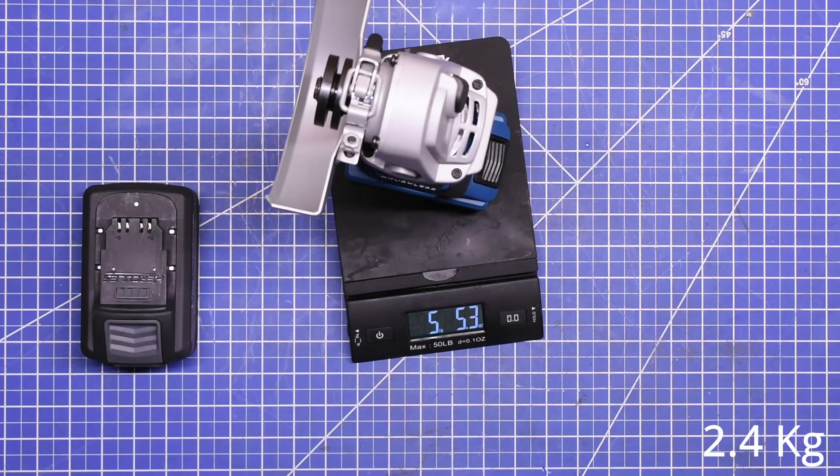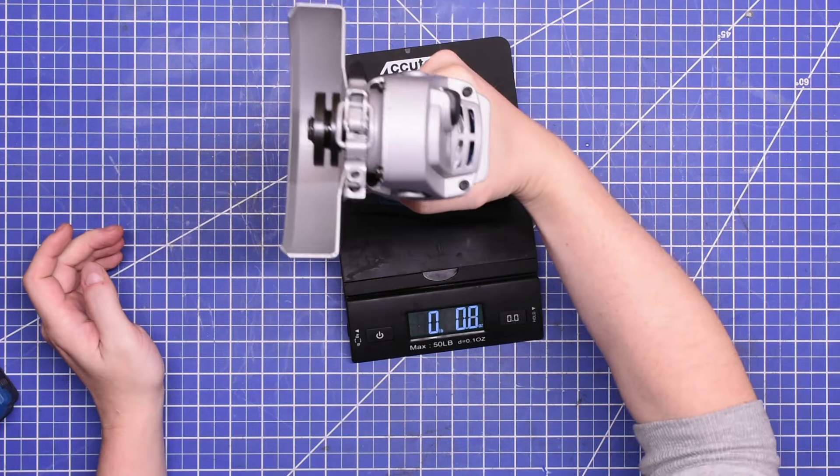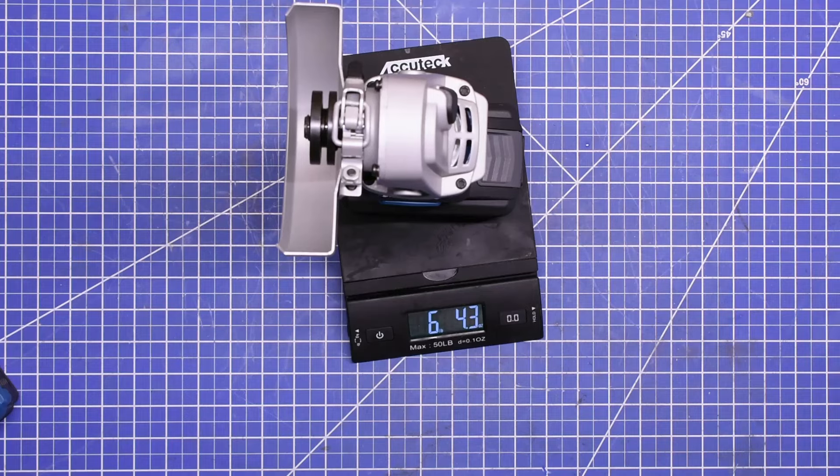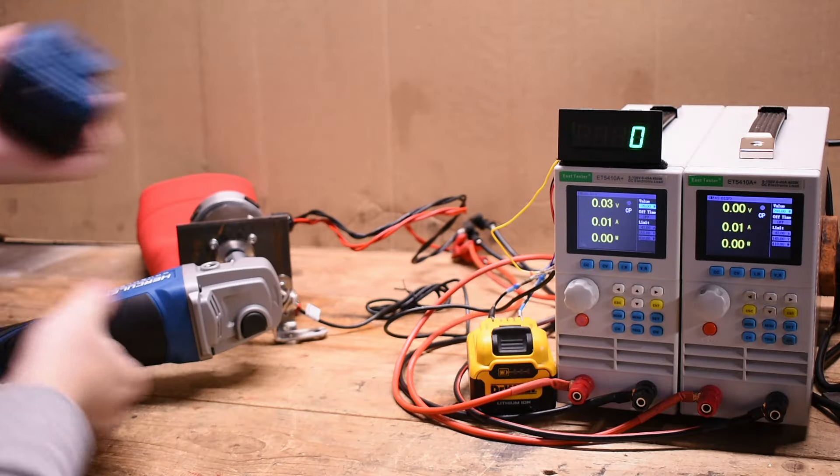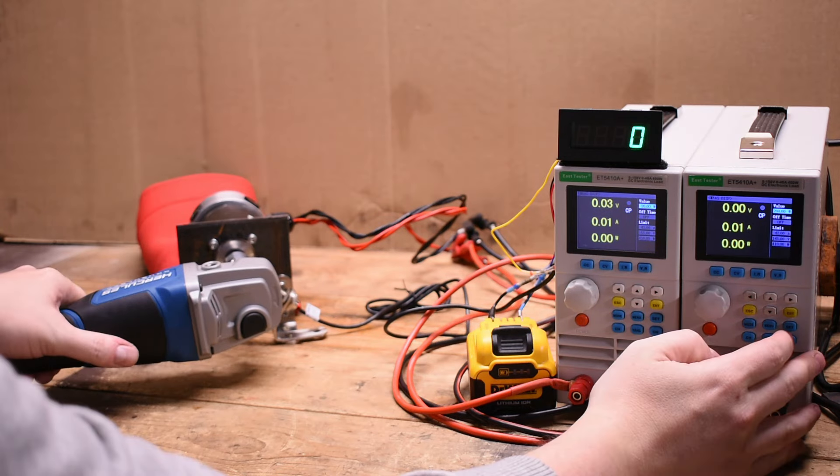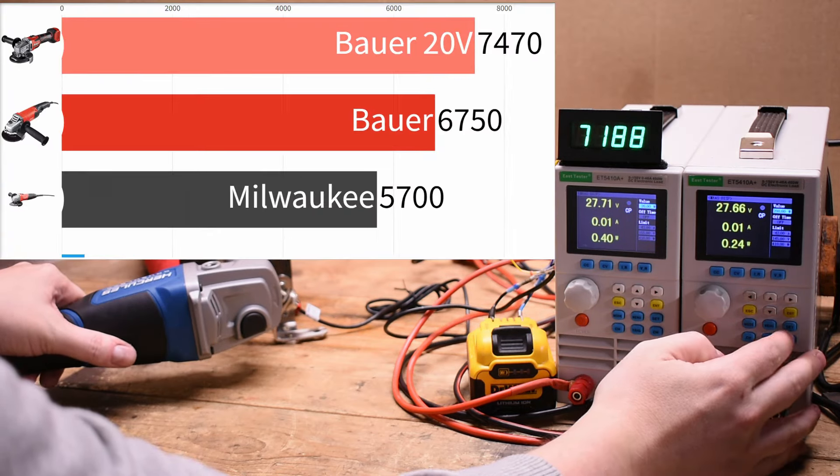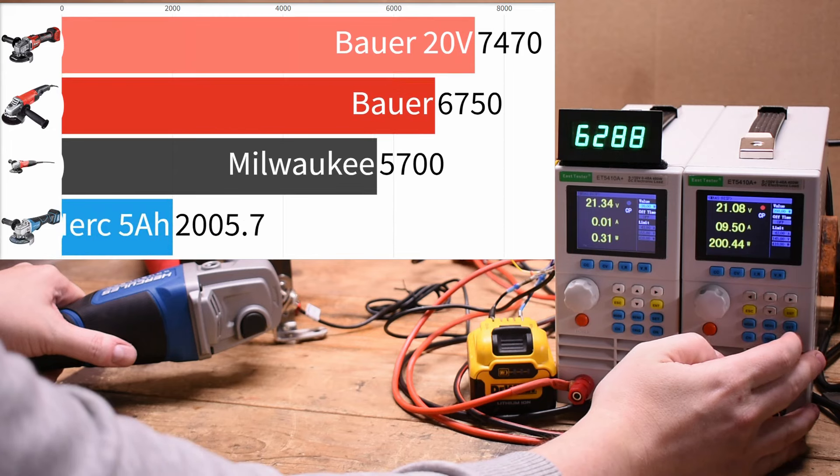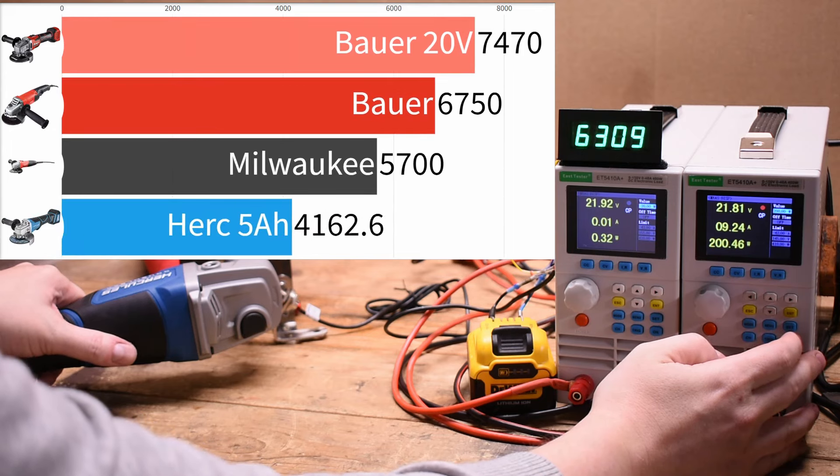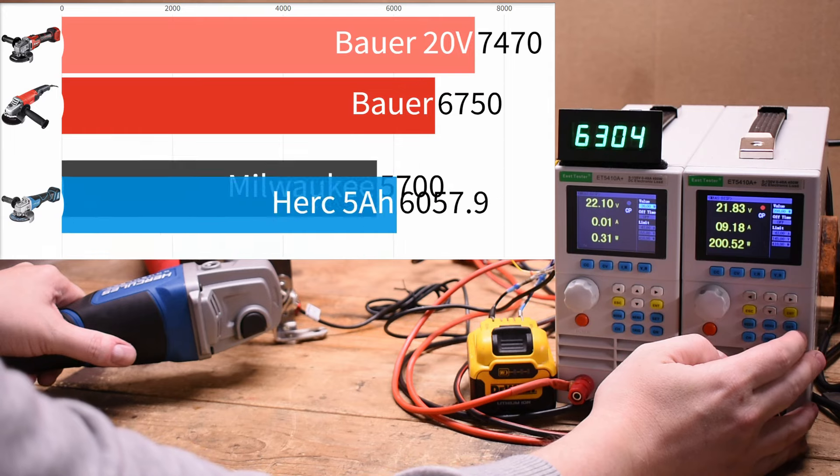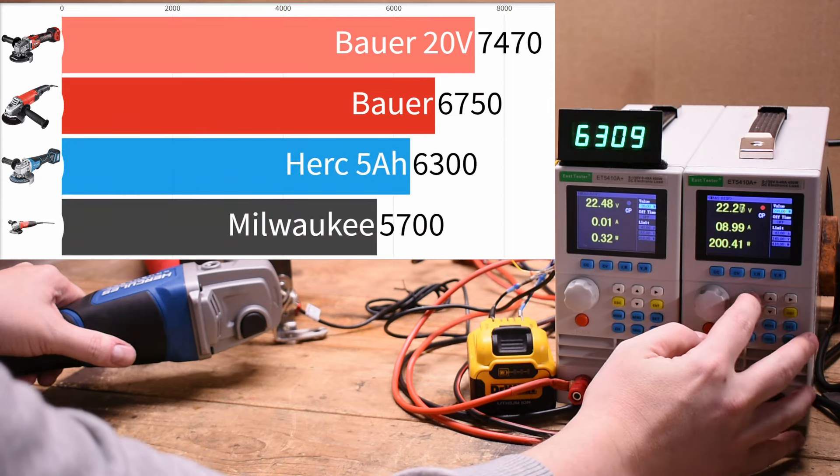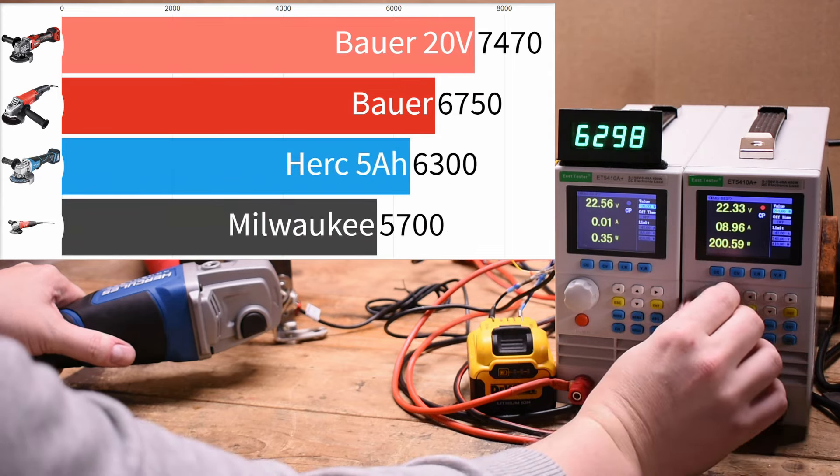It's a heavier tool—five pounds three ounces with the five amp hour battery and over six pounds, six pounds four ounces, with the eight amp hour pack. But it does feel balanced and even less vibration than the brushless Bauer. Let's take a look, starting out with the five amp hour pack first, which is very much a viable choice that many people might be running.